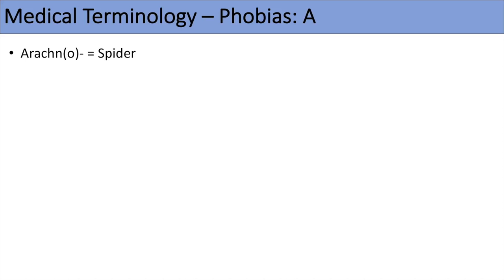We're going to start with phobias that begin with the letter A, going through alphabetical order. Going through prefixes with regards to phobias helps us with our general medical terminology as well. The first prefix is arachno, which means spider. Combined with the suffix phobia, arachnophobia means a fear of spiders. The next one is acro, which means heights, so acrophobia would be a fear of heights.